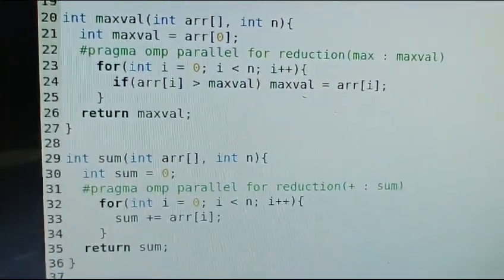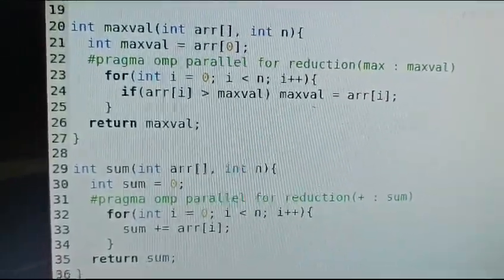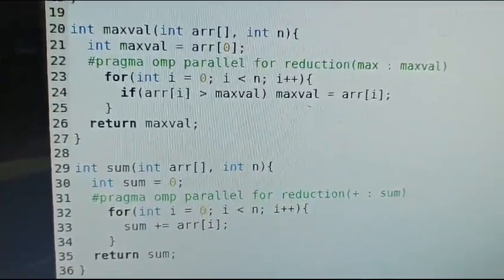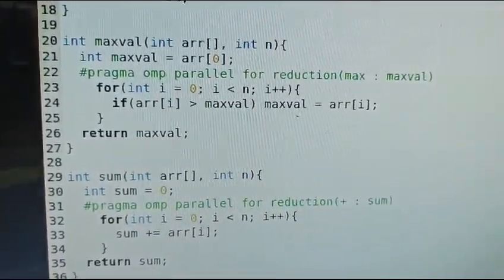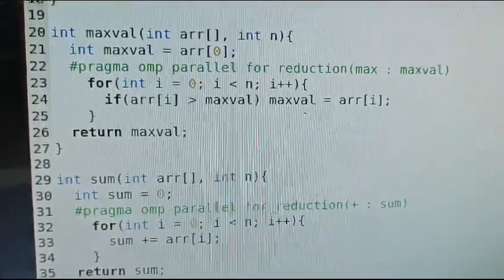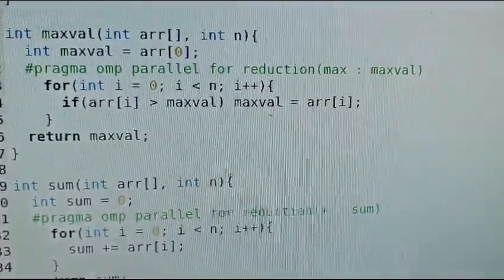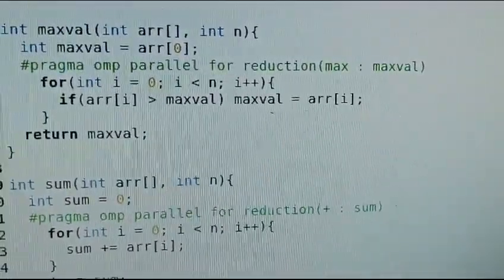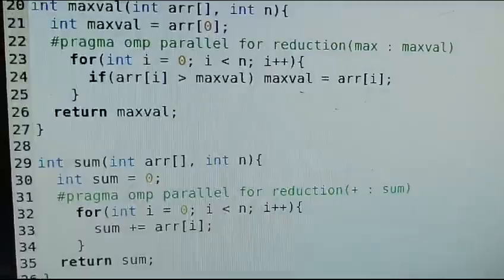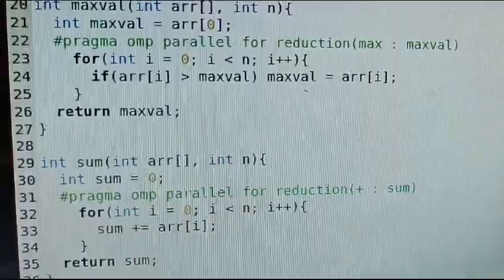Next is sum function. It takes array as first argument and size n as second argument. It initializes sum equal to zero. Then hash pragma omp parallel for reduction(+ : sum). This directive specifies the following for loop should be executed in parallel using multiple threads. The reduction plus colon sum clause indicates each thread should maintain a private copy of sum.